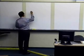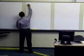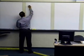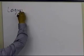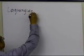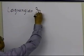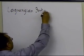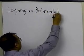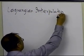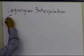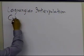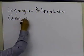In this segment, we're going to take an example of Lagrangian interpolation. As we said, these are just forms of polynomial interpolation written in different forms, and we're going to take an example of cubic interpolation.